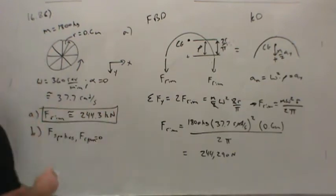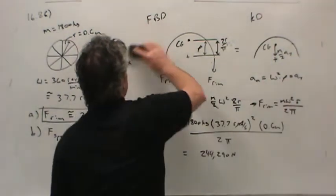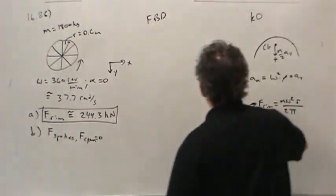And so, this is 244,290 newtons, or about 244.3 kilonewtons. There's the force in the rim for part A, when the spokes aren't offering any structural integrity. So, taking care of question A.